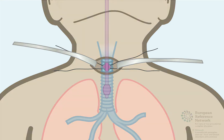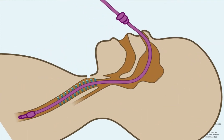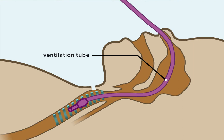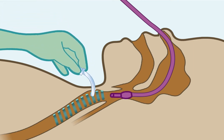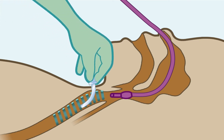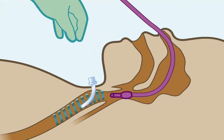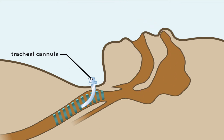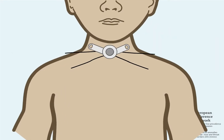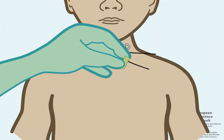After this, the ventilation tube is retracted, and another smaller tube, called a tracheal cannula, is placed through the tracheostomy. Now the child can breathe through the tracheal cannula, and the ventilation tube can be completely removed. Then the stay sutures around the tracheal cannula are secured with tape.